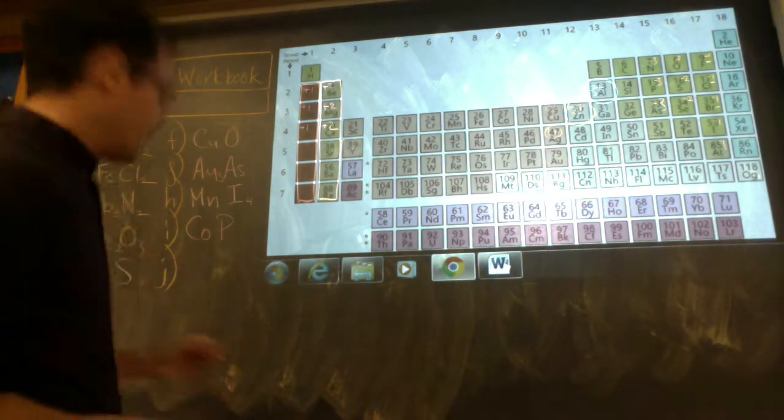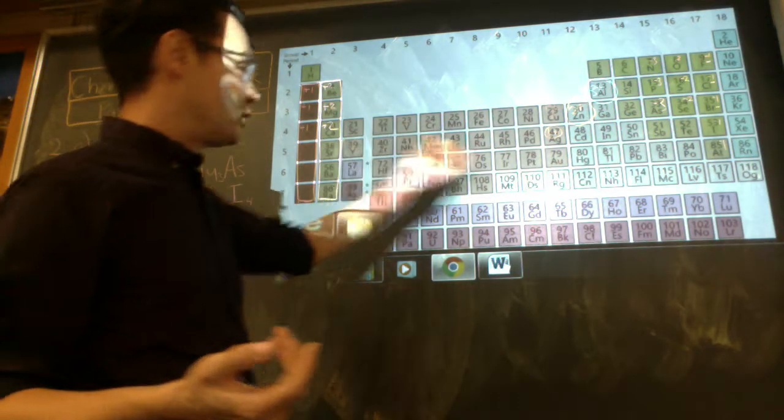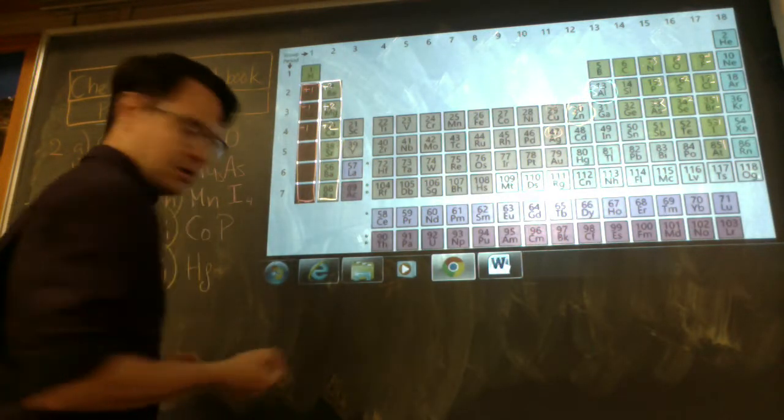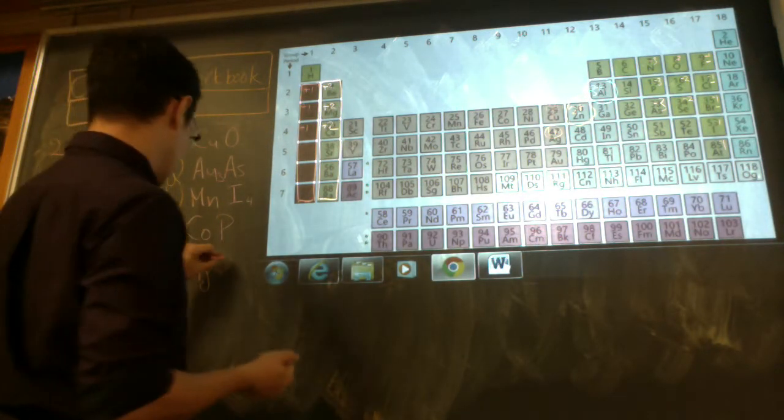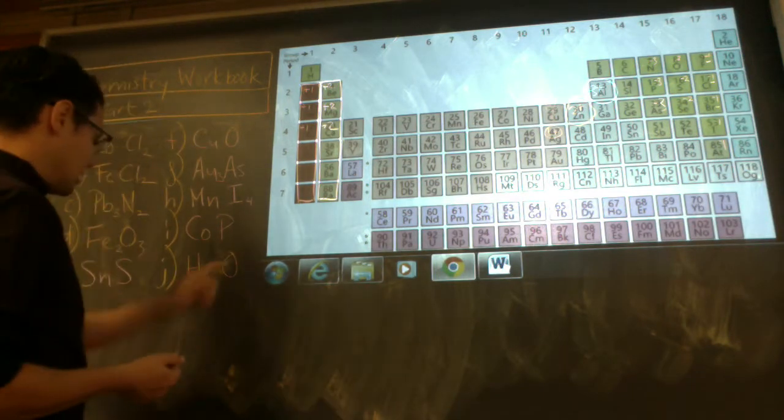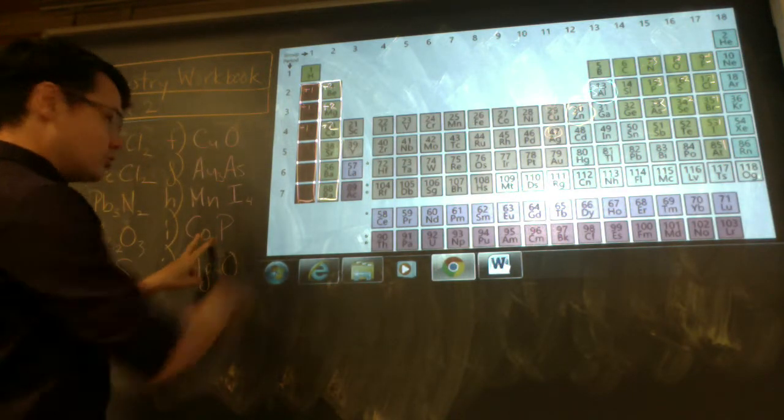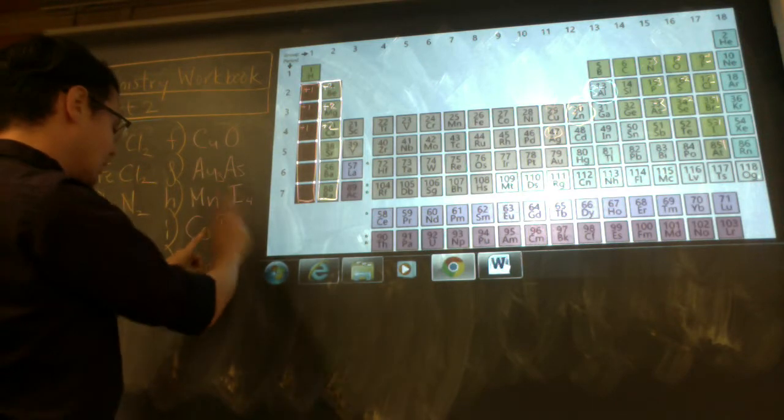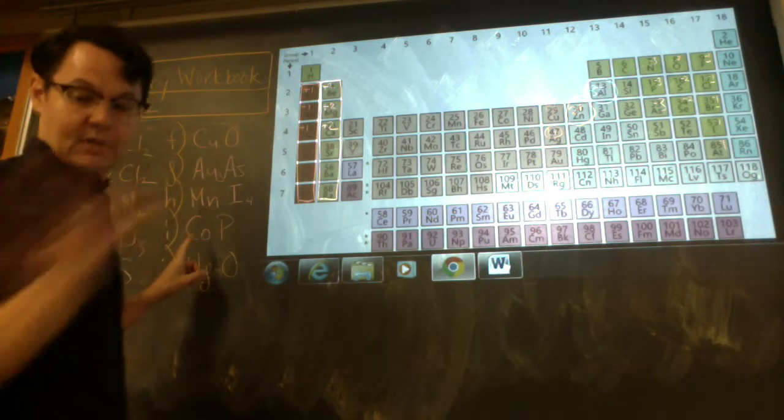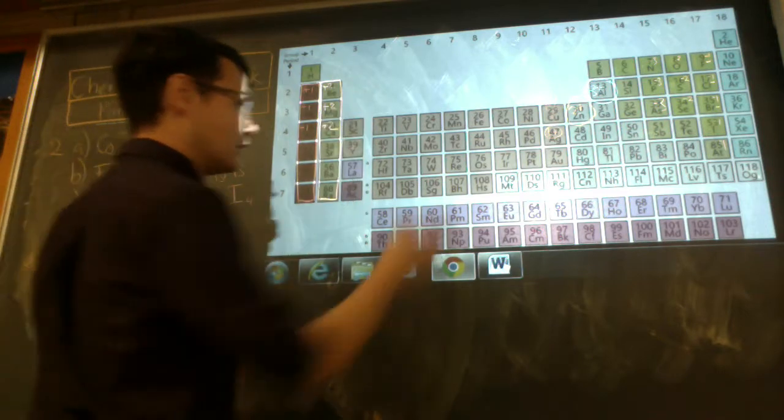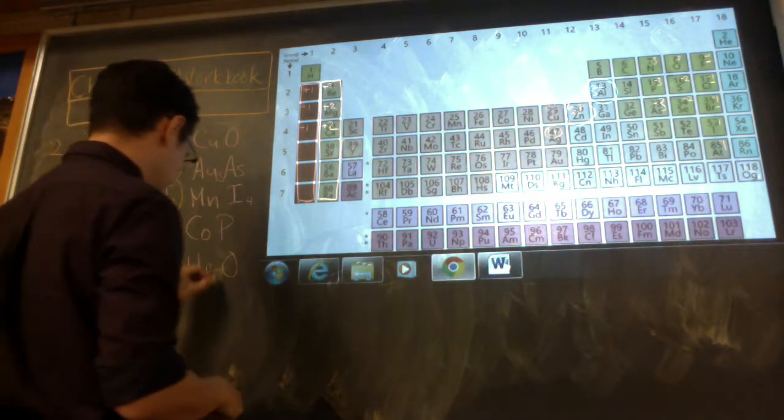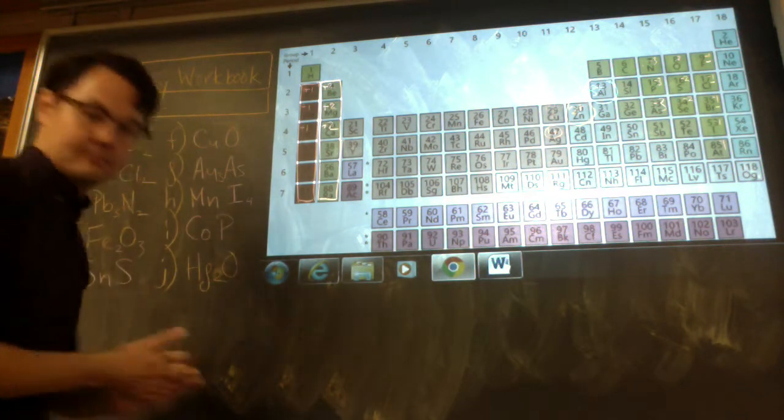Mercury(I) oxide. Mercury is a tricky one as well. It's Hg. Mercury and oxygen. HgO. Mercury is 2... Oxygen is also... Oh, mercury(I). Sorry. Mercury 1+. Oxygen 2-. Again, mercury(I) from the name. And oxygen is always 2-. So Hg2O.